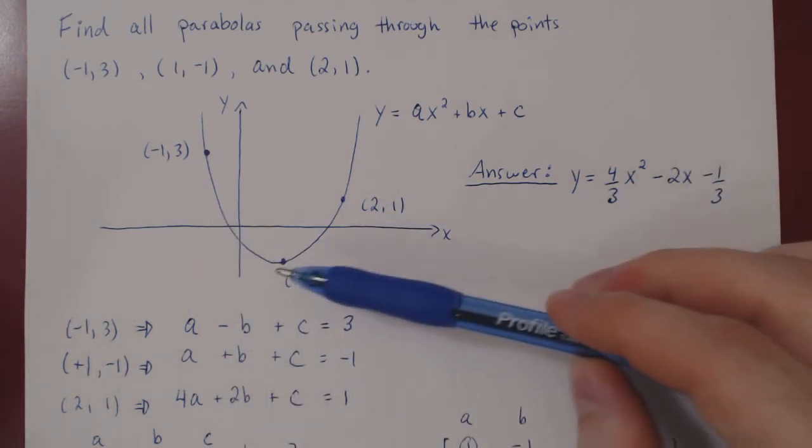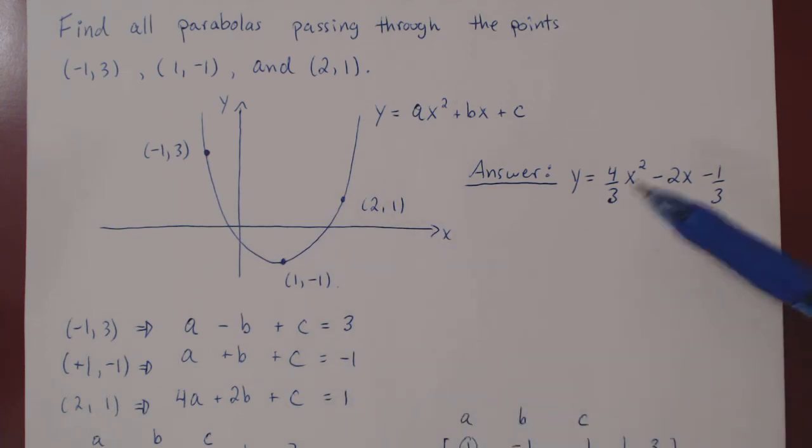If we had removed one point, either one of these three, we would have found out an infinite number of solutions, therefore an infinite number of parabolas. And that's it.